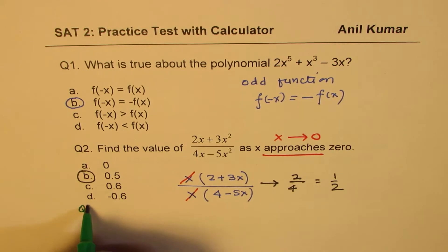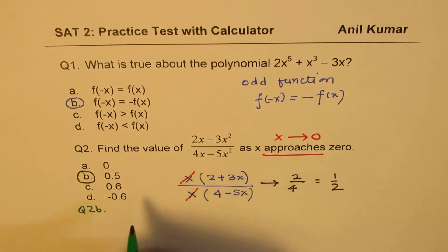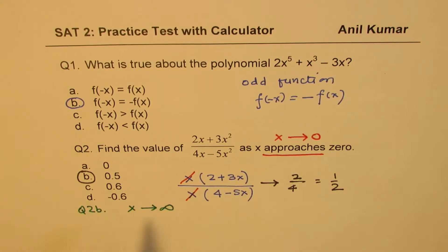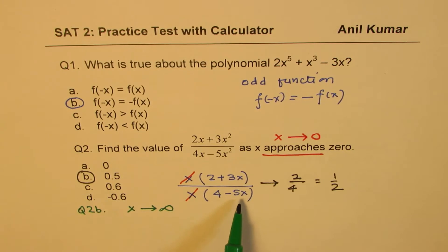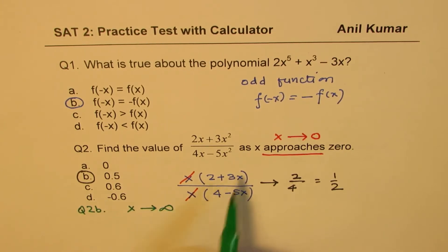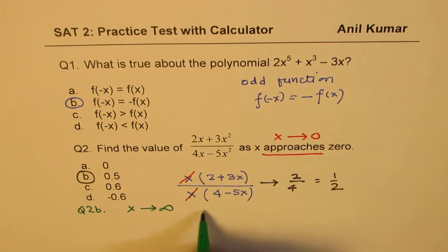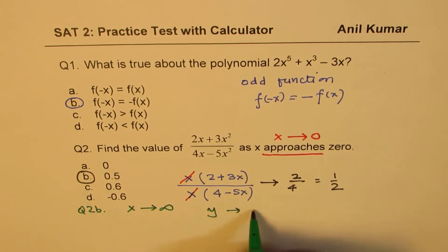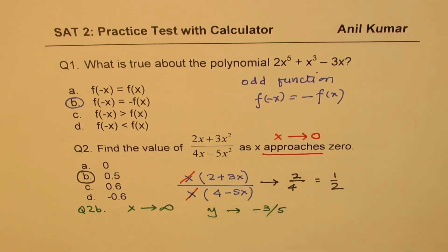Here is a variation to question 2 — question 2b: find the value when x approaches infinity. In the same expression, if x is approaching infinity, the answer should be 3 over minus 5, so y will approach negative 3 over 5. That could be a variation to question number 2.